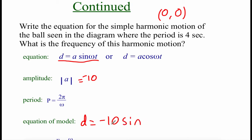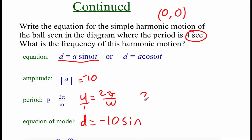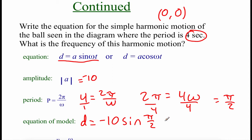So our equation starts with −10 sine. Now we find the omega value. We know the period equals 2π/ω and the period is 4 seconds, so 4 = 2π/ω. Making 4 a fraction and cross-multiplying: 2π = 4ω. Dividing by 4, we get ω = 2π/4 = π/2. So the equation is d = −10·sin(π/2 · t).